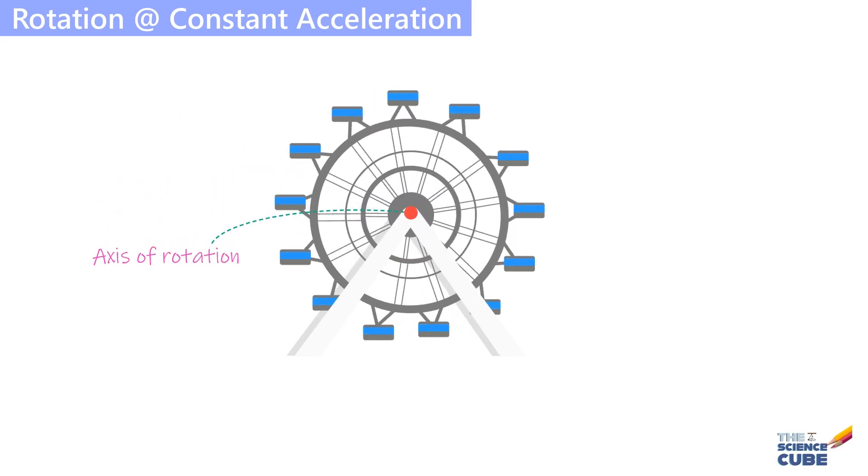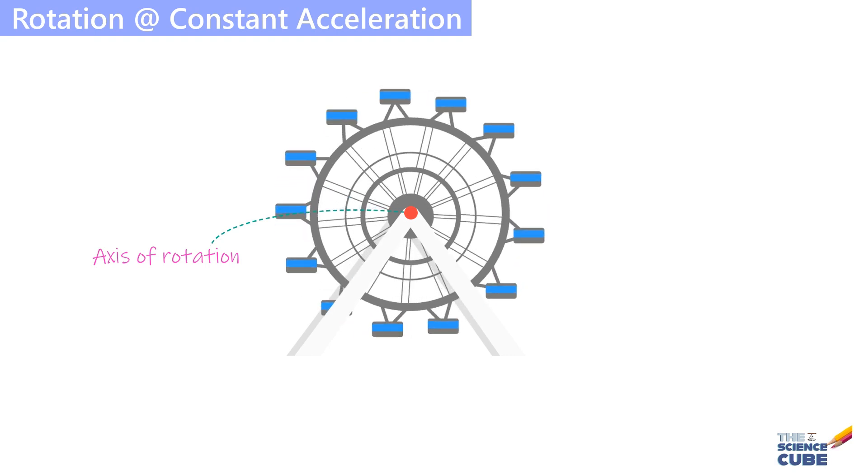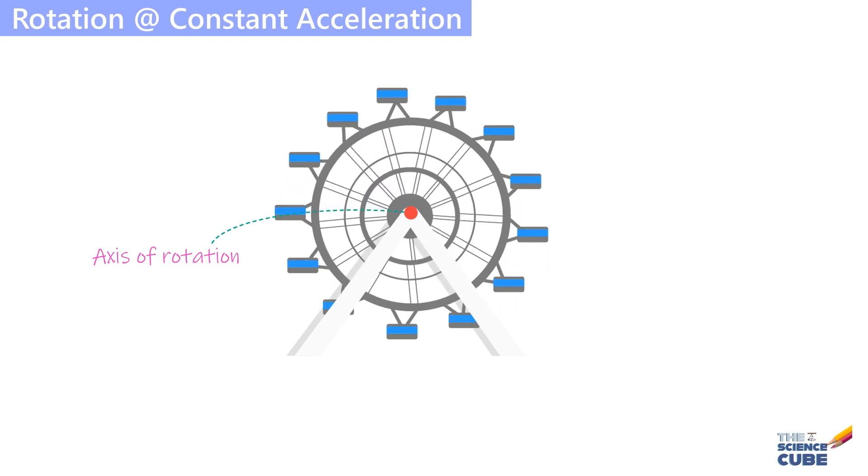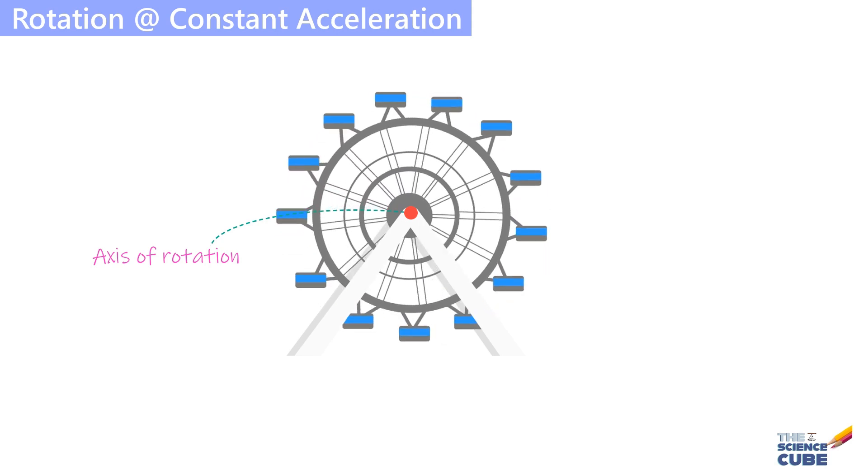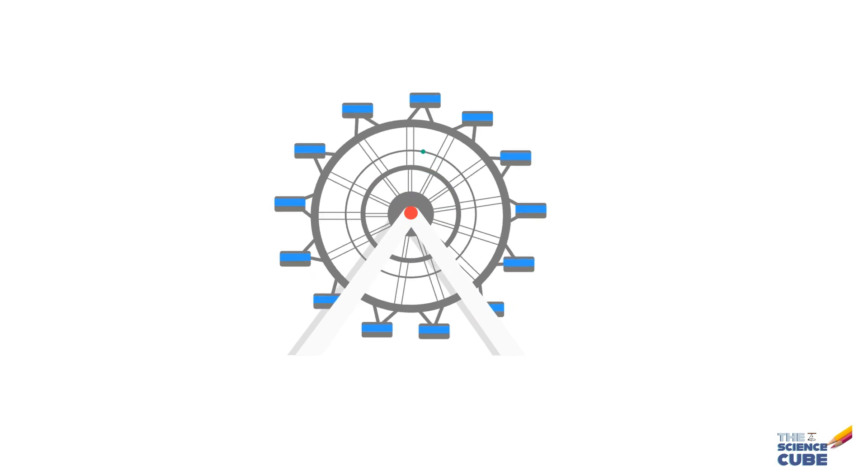Earlier, we learned that when a rigid body, let's say a giant wheel, rotates around an axis, each particle of the body moves in a circle around the axis with its own radius. This point has its radius, this one has its radius, and so on.